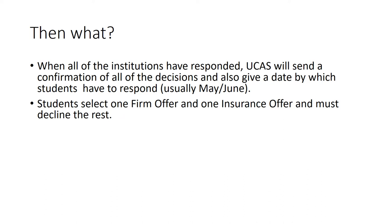Once all the institutions a student has applied to have responded, UCAS will send a confirmation of all the decisions and give a date by which students need to respond to those offers — usually in May or June depending on when the student has received all their offers. It is then necessary to select one firm offer and one insurance offer. You will probably be able to determine yourselves that it is sensible that the insurance offer is lower than the firm offer.